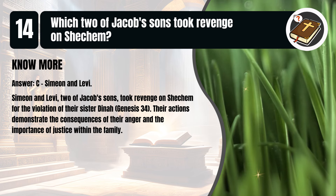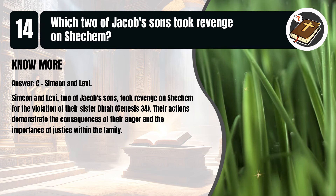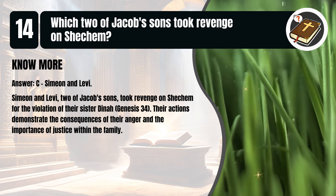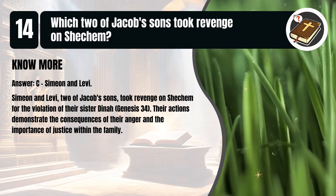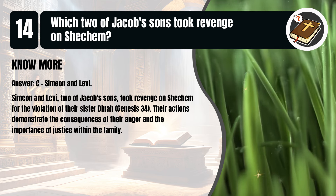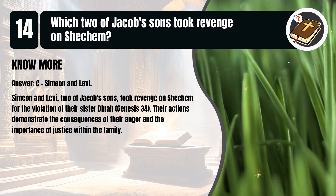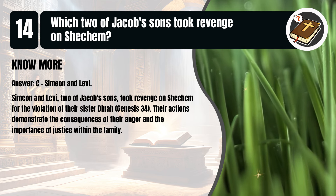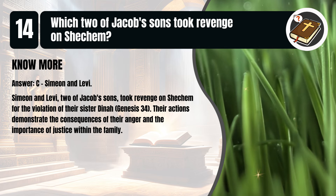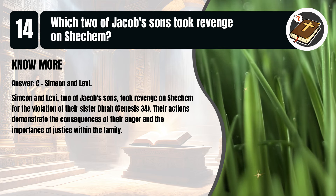That's C. Simeon and Levi. Simeon and Levi, two of Jacob's sons, took revenge on Shechem for the violation of their sister Dinah. Genesis, chapter 34. Their actions demonstrate the consequences of their anger and the importance of justice within the family.